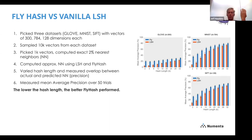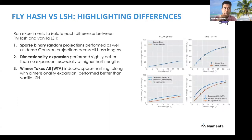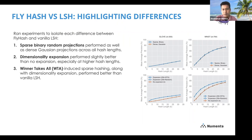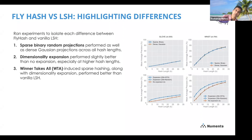What these guys did next was run ablation experiments to isolate each aspect of fly hash. They found that sparse binary projections performed as well as dense random projections across all hash lengths. Winner-takes-all with dimensionality expansion together performed better than vanilla LSH. But just expansion without WTA showed little or no difference from standard LSH.